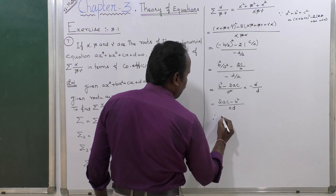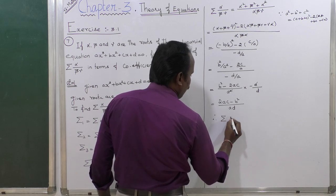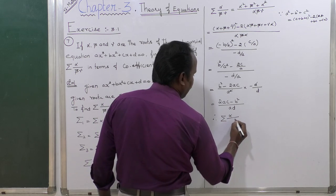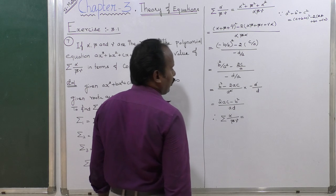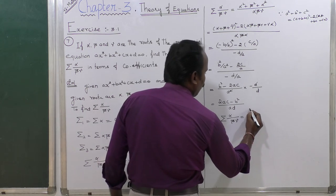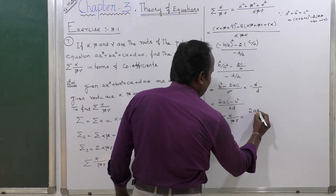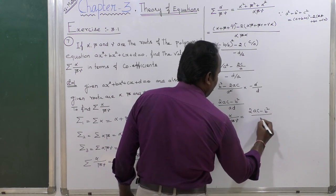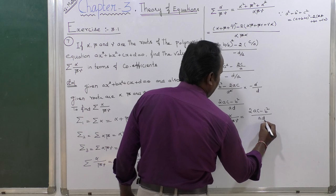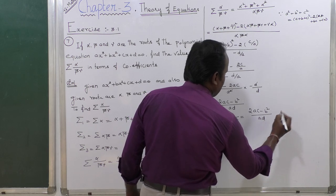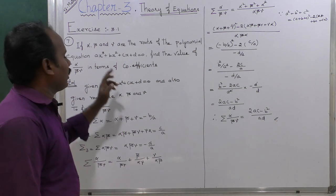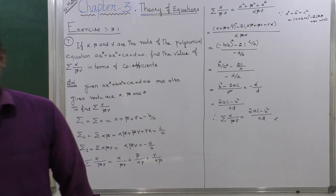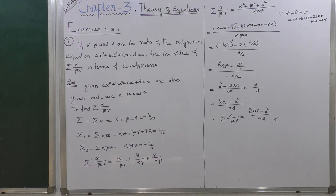Therefore, summation of alpha divided by beta·gamma = (2AC − B²) divided by AD. Hence the proof. Very easy, this one. Thank you.